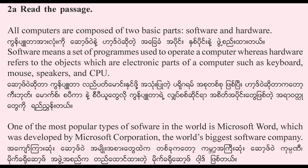2a. Read the passage. All computers are composed of two basic parts: software and hardware. Software means a set of programs used to operate a computer, whereas hardware refers to the objects which are electronic parts of a computer, such as keyboard, mouse, speakers and CPU.